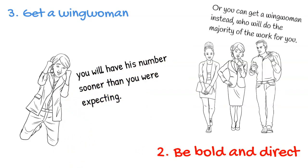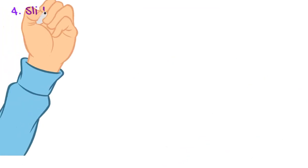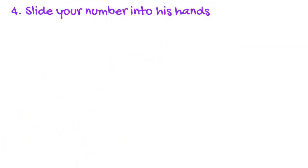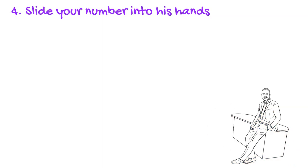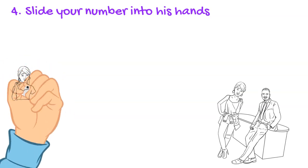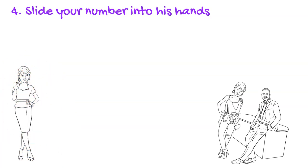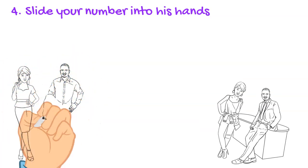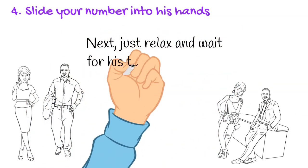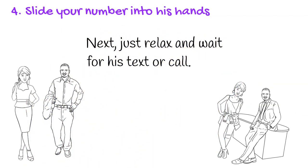Four: slide your number into his hands. Another brave alternative is to just slide your number into his hands. Believe me, there's nothing sexier or more powerful than that. If you're in a bar, simply pretend that you're going to the toilet, and when you reach him, just slide your number into his hands. Then relax and wait for his text or call.